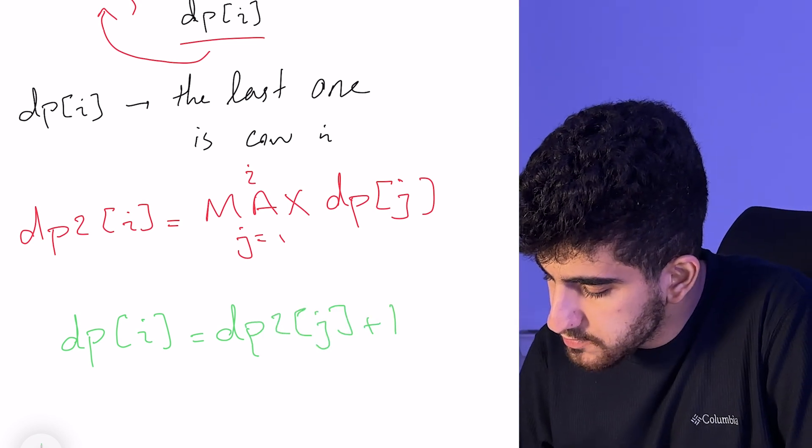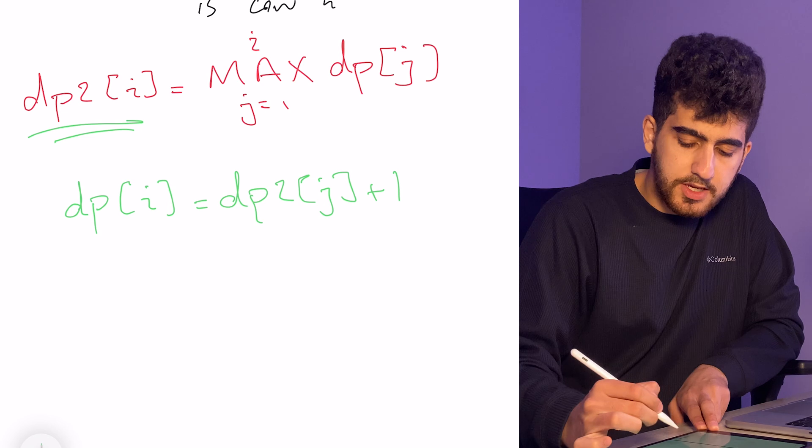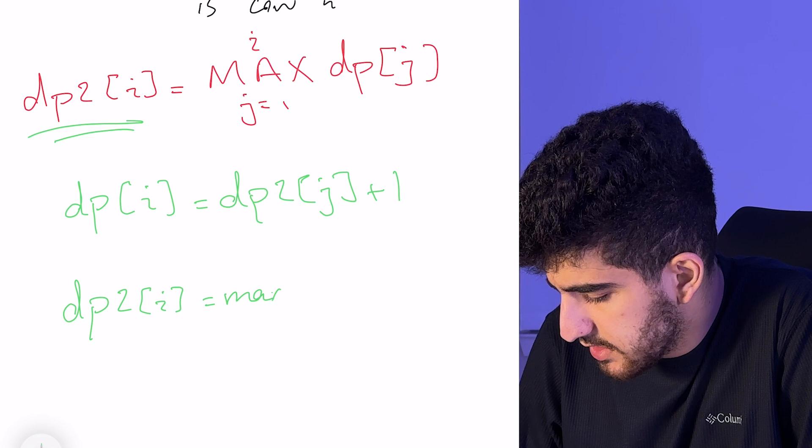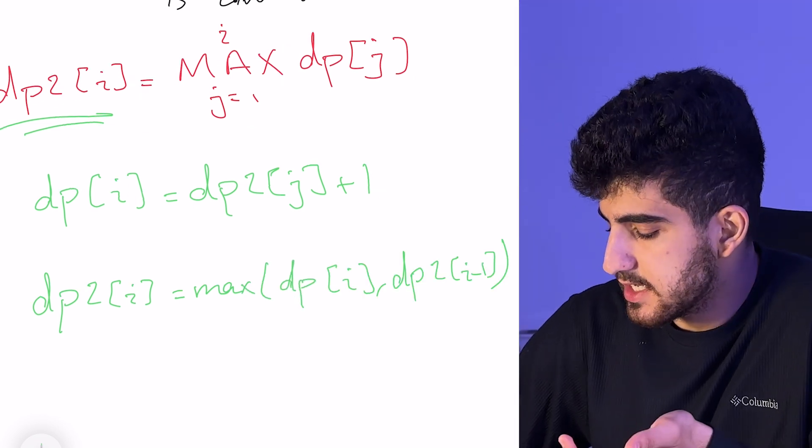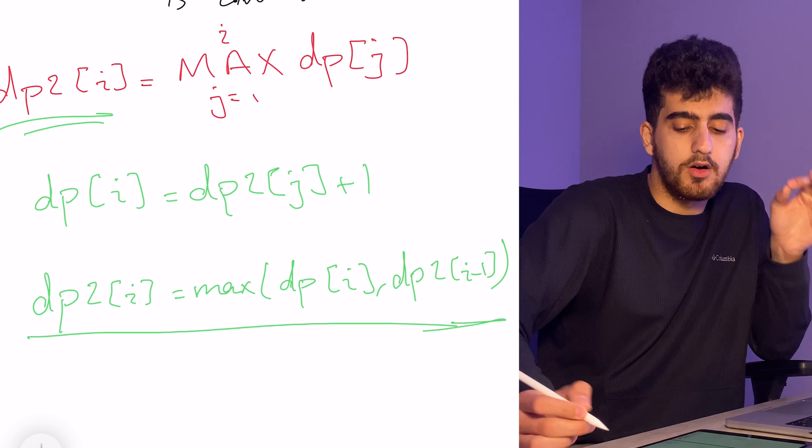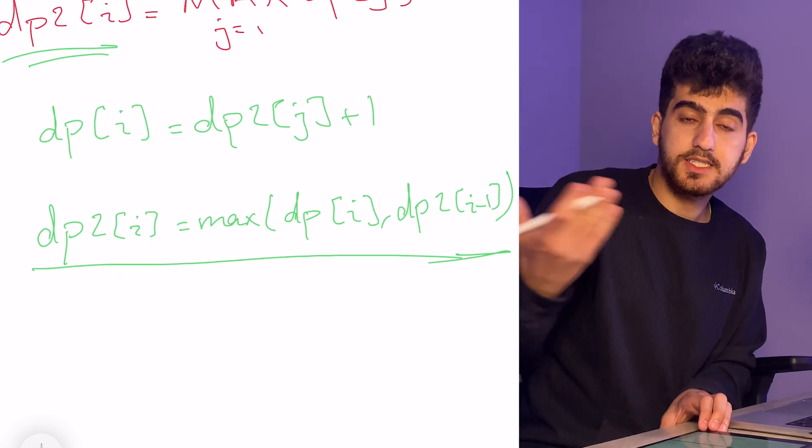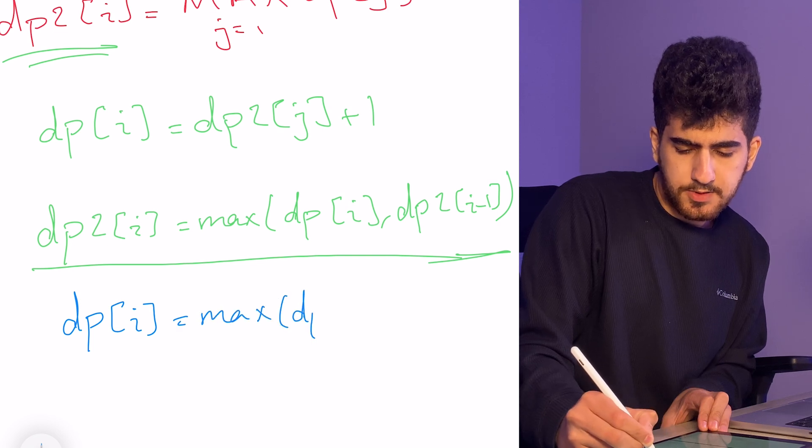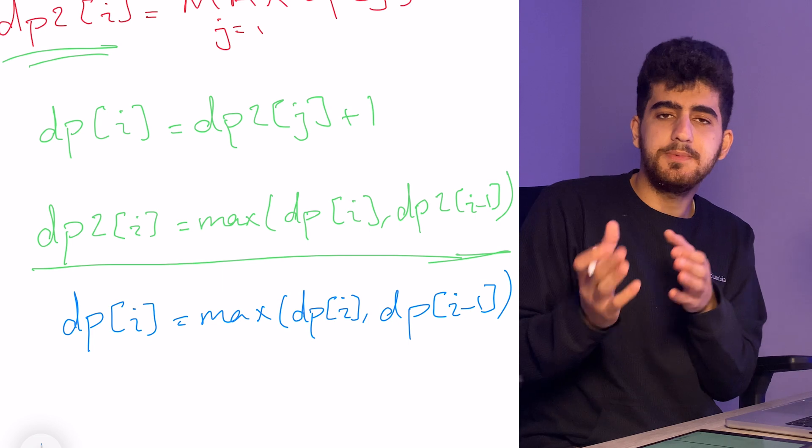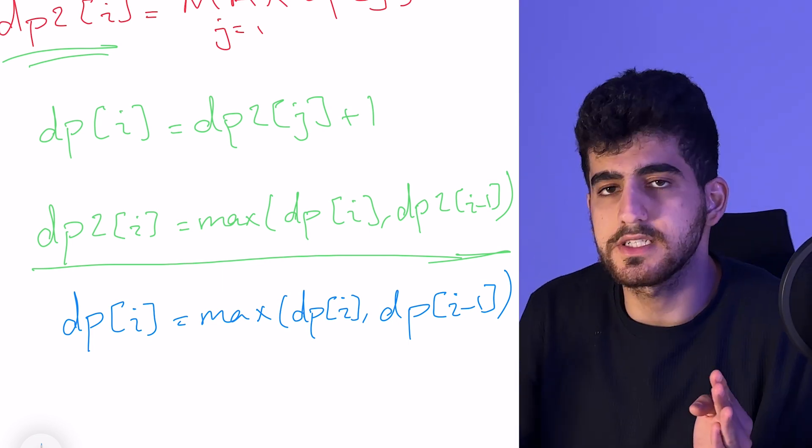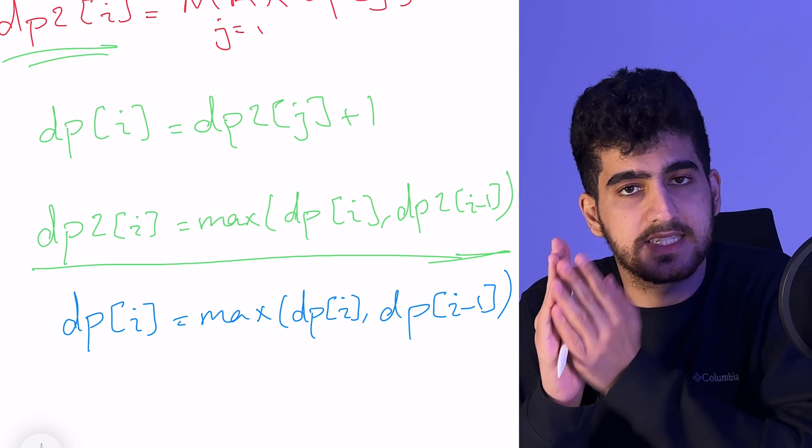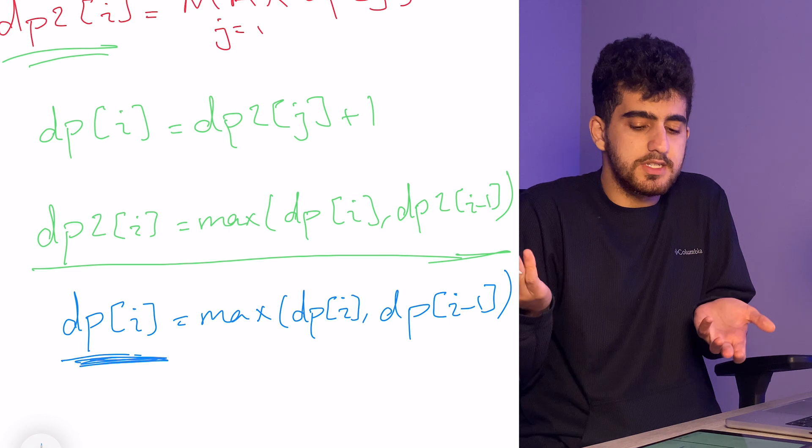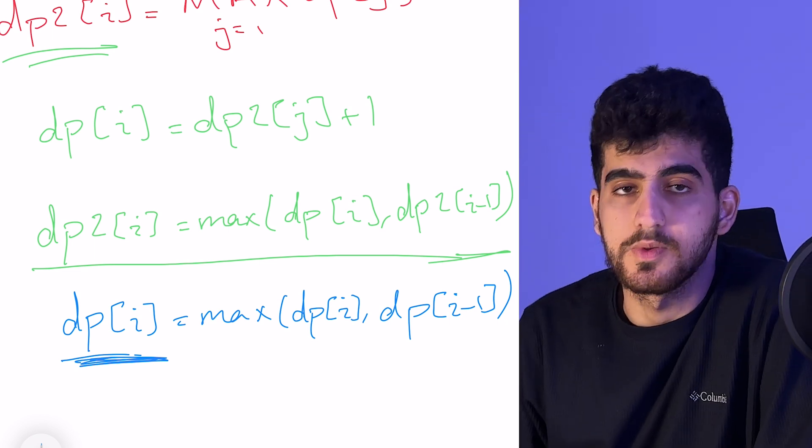In order to find dp2 of i, I just say that each time in order to calculate it, dp2 of i is equal to maximum of dp of i and dp2 of i minus 1. Instead of this, I can just use dp and don't define dp2 at all. Each time after I calculated dp, I can simply say that dp of i is equal to maximum of dp of i and dp of i minus 1. This way, I can have the dp itself as my dp2. Because when I pass over some dp, then I don't need that dp anymore, I need the maximum of all dps until that point.